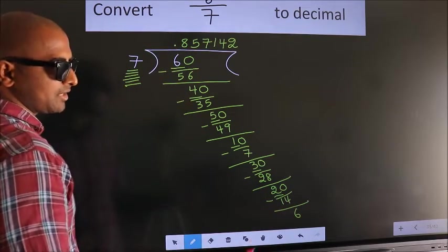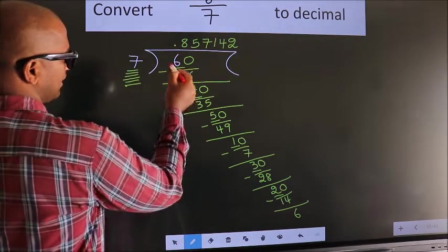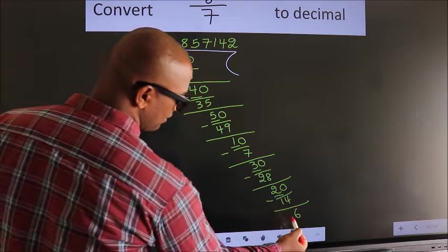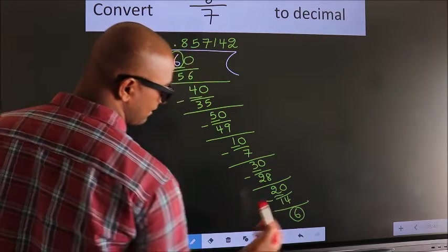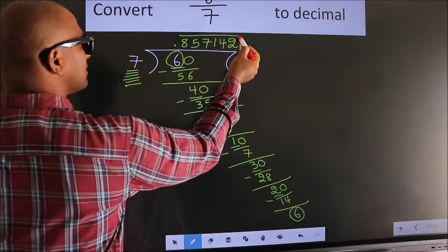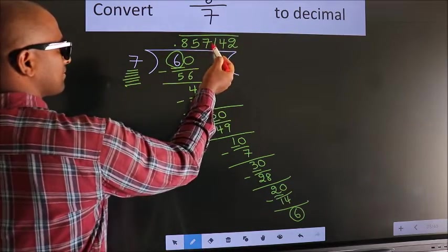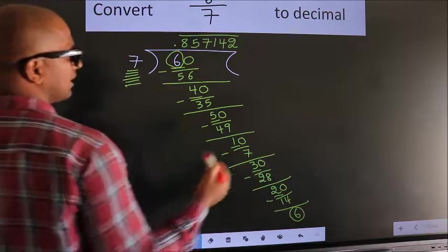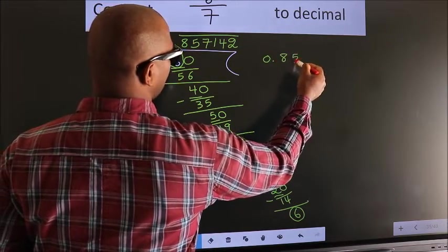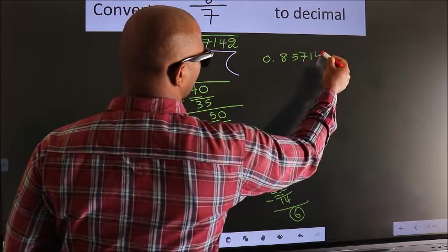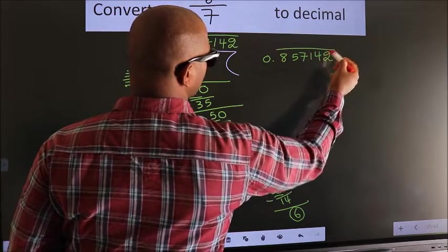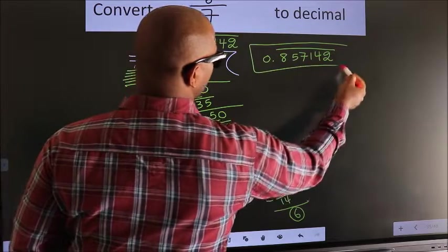Now you observe — here we had 6, and we got 6 again. That means we get a bar on these numbers. Therefore, our answer is 0.857142 with a bar on these numbers. This is our answer.